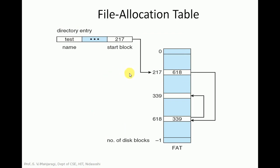Now let us look at the File Allocation Table used in older Windows. This is a directory entry in FAT, having the file name and start block. The name is 'test' and the start block is 217. So there is a pointer to block number 217, which stores the value 618 — pointing to block 618. At 618 the value 339 is stored, pointing to block 339. Finally, minus 1 is stored, indicating the end. That is how links are established in the file allocation table — similar to a linked list.